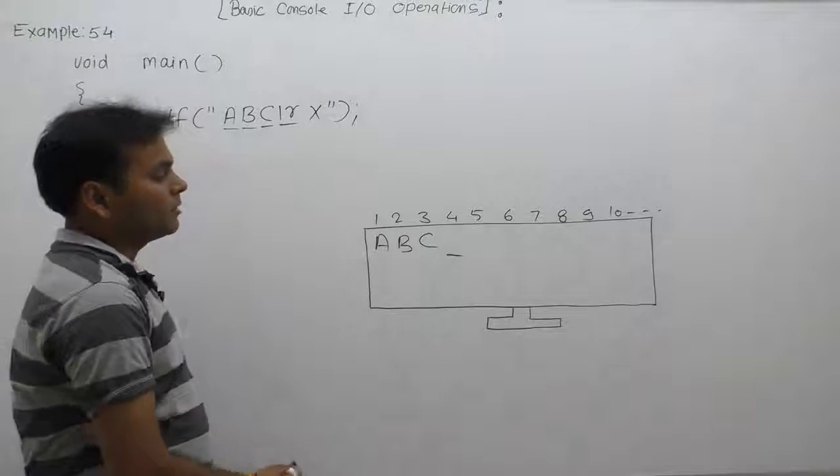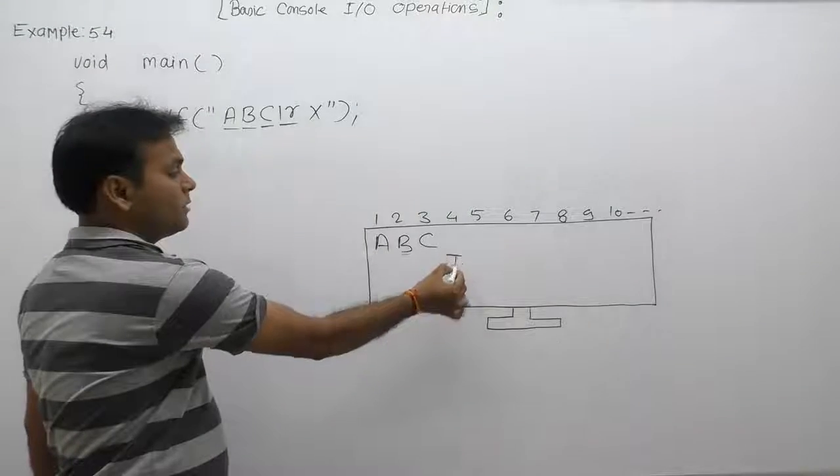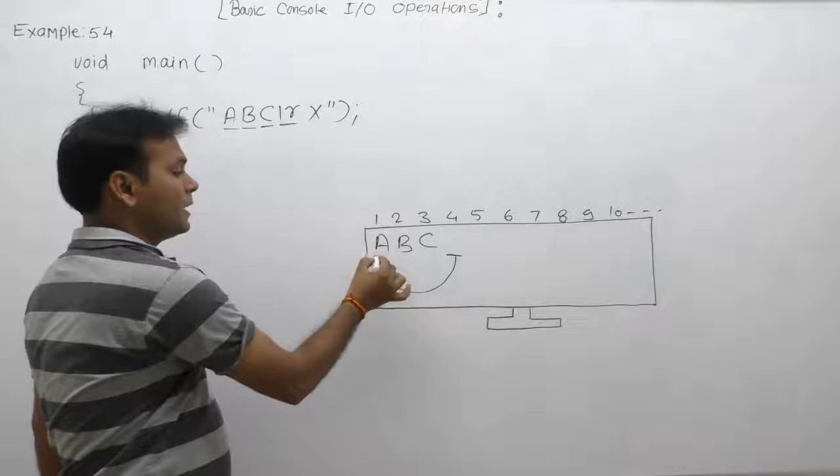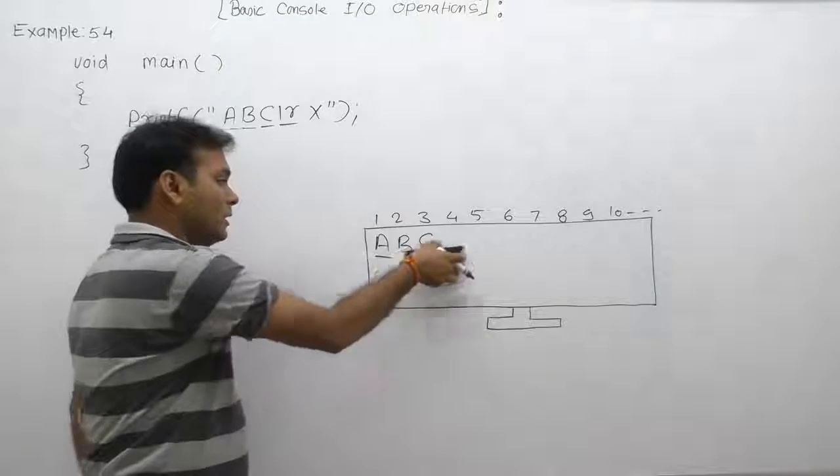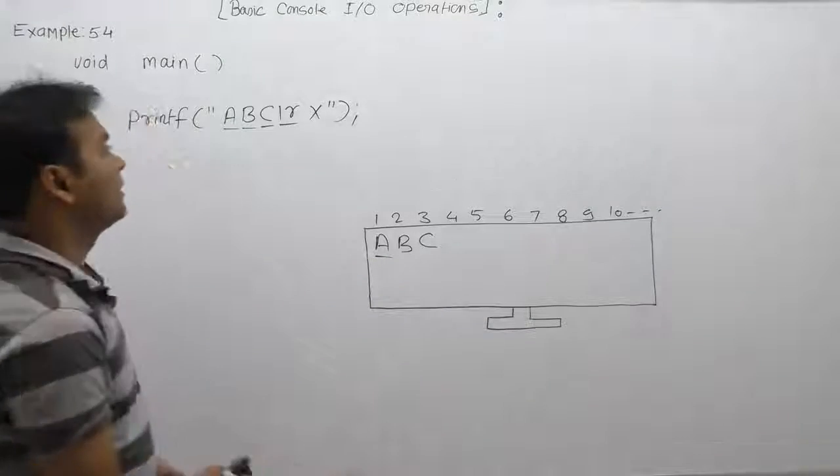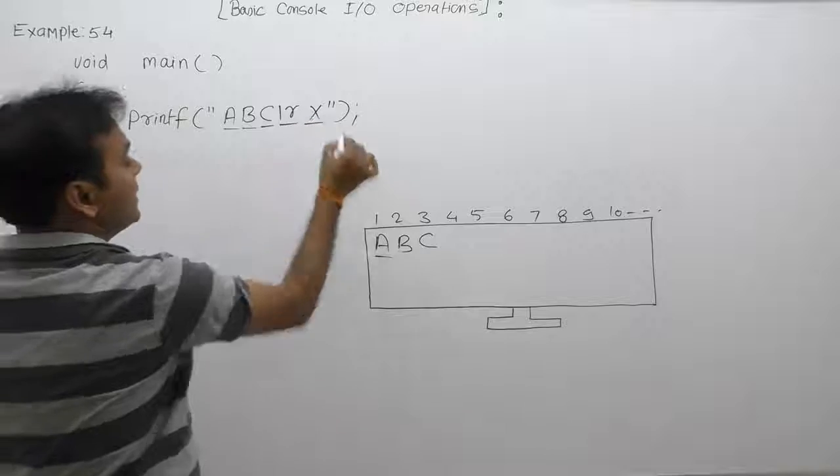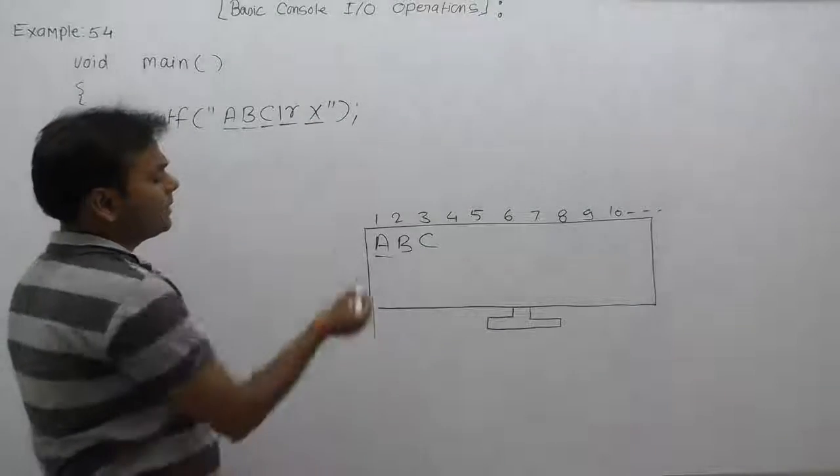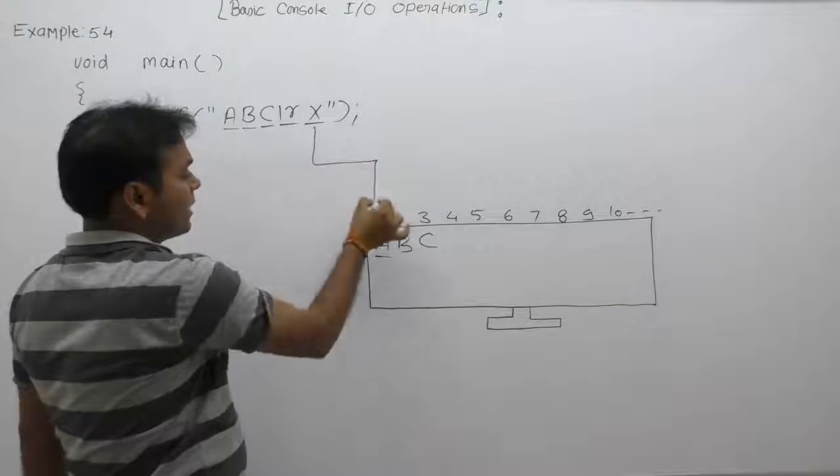Cursor will be moved on the first position of the same line or current line. Now cursor will be pointing at character A. After that, printable character as X, then X is printed on the current position of the A cursor.